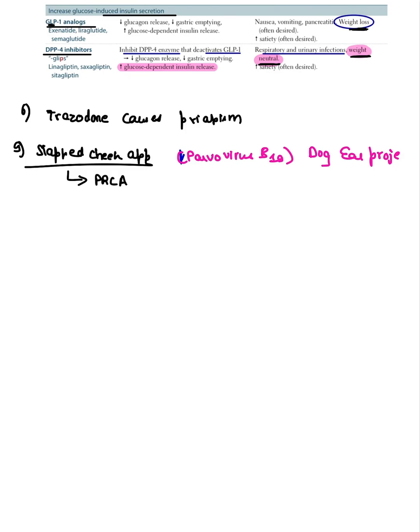The next question: which drug causes priapism? That is trazodone. Similarly, one question asked which drug causes agranulocytosis as a side effect — that is clozapine.